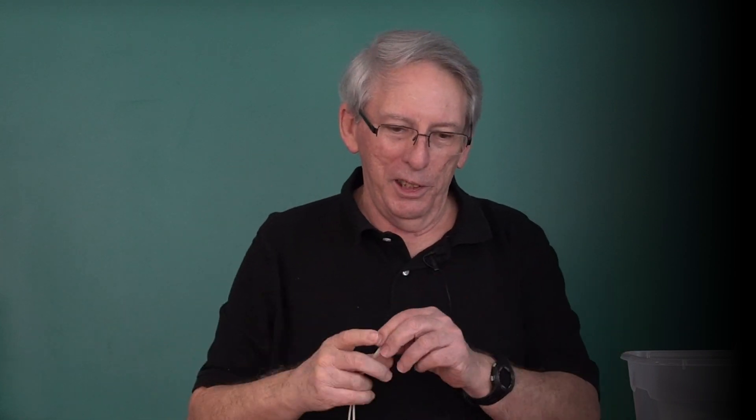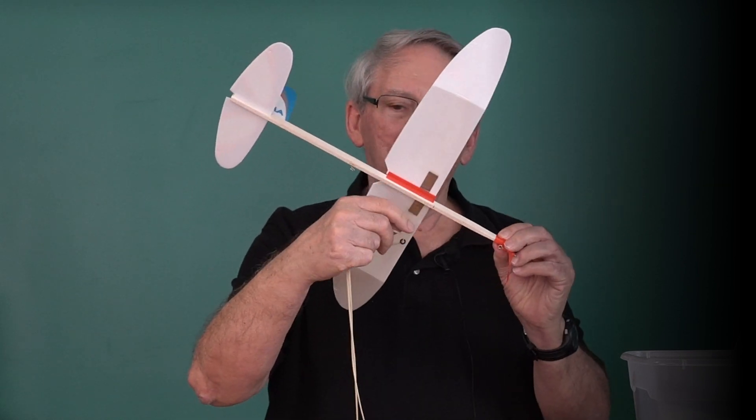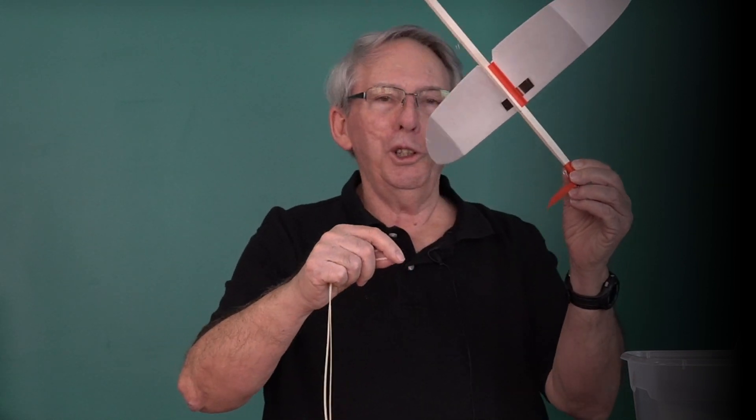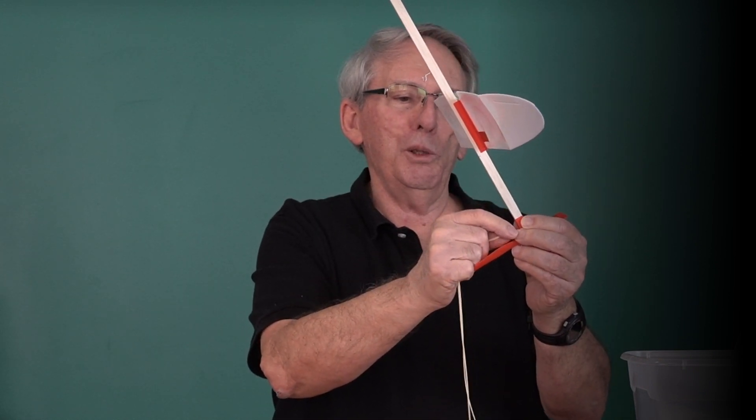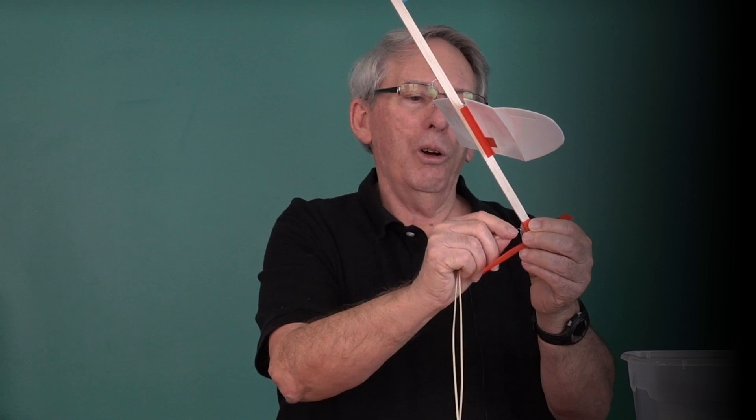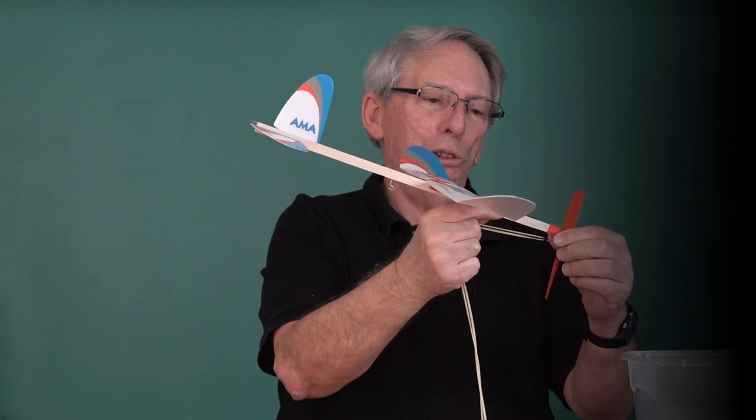Okay, now we're ready to wind our motor that's been lubricated. The easiest way to do this is to attach the motor to the propeller just by sliding the rubber loop or the O-ring, if you're using O-rings, onto the hook.